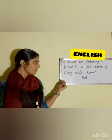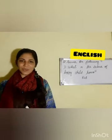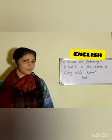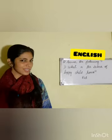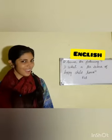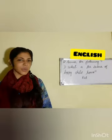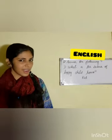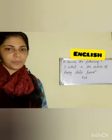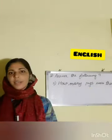Our next activity is: answer the following questions. First question — what is the color of Happy Child's house? You just try to say the color of Happy Child's house. That is red. R-E-D, red. Clear?